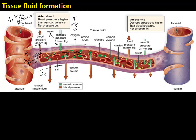Once the tissue fluid is bathing the cells, oxygen, glucose, amino acids, and mineral ions all enter the cells by either simple diffusion or facilitated diffusion. Carbon dioxide and urea, or any other waste product of metabolism, are released from the cells into the tissue fluid, and that tissue fluid then drains back into the venous end of the capillary.